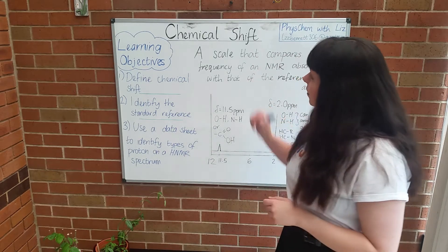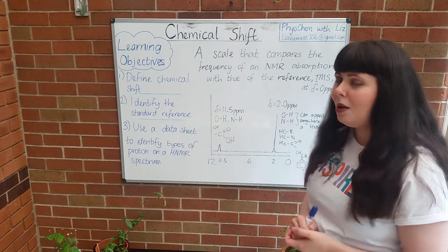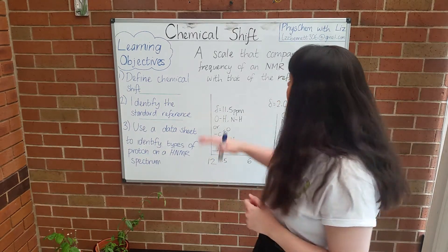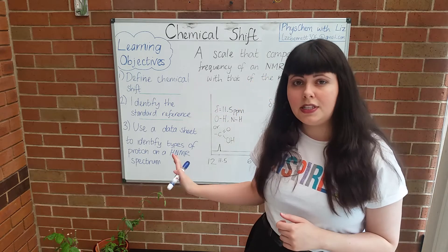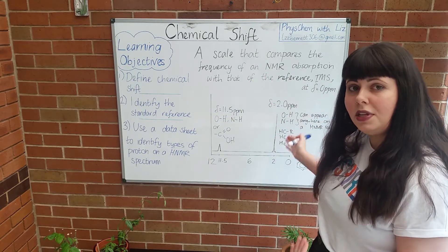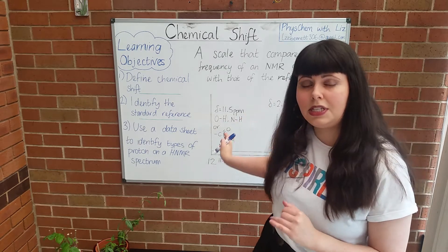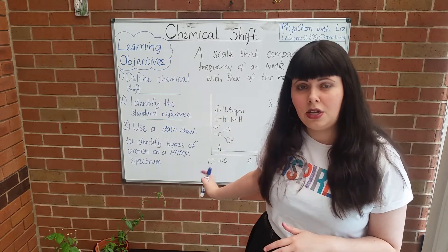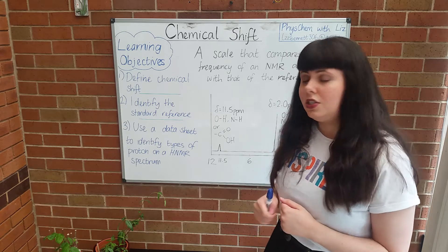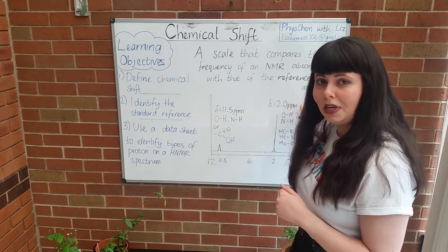So first of all, what is chemical shift? It can be defined as a scale that compares the frequency of an NMR absorption with that of the reference sample TMS. This scale is measured in something called parts per million, ppm.